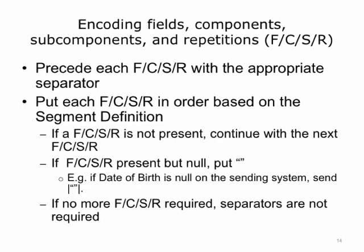However, if the field component, subcomponent, or repetition has a null value — meaning it is an empty field on the sending system or it has been deleted — the sending system would put double quotes to show that it is null. For example, if the birth date is empty on the sending system, the sending system would put double quotes in between the vertical bars. If there are no more fields, components, subcomponents, or repetitions required and no data left to send, then separators are not required at the end, and a carriage return is added to end the segment.